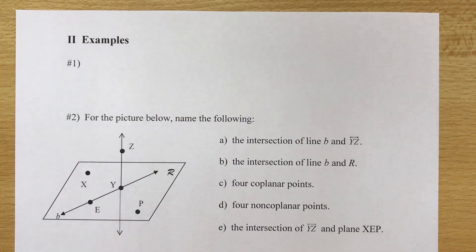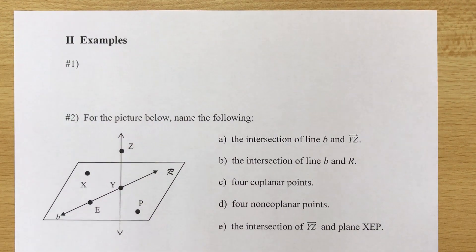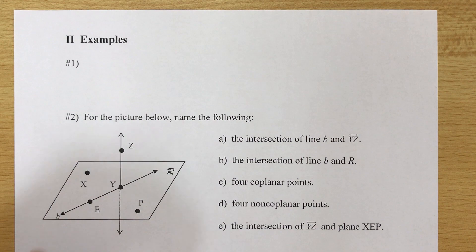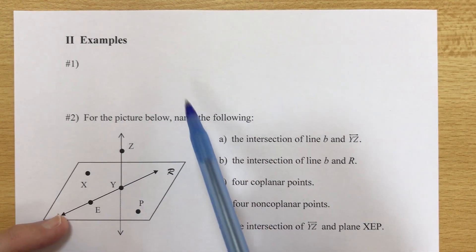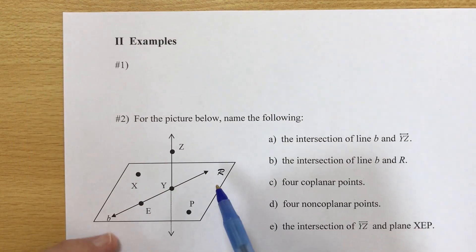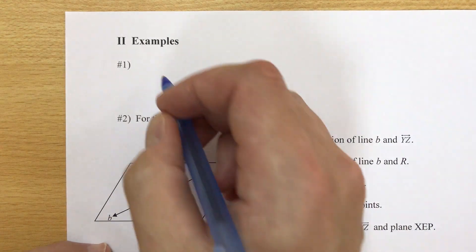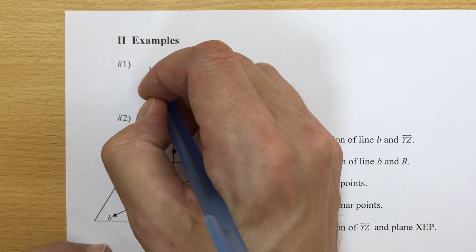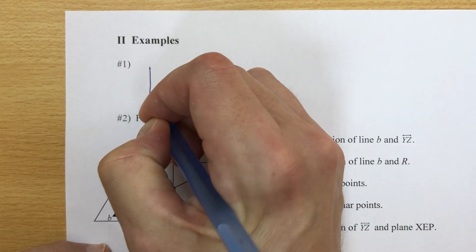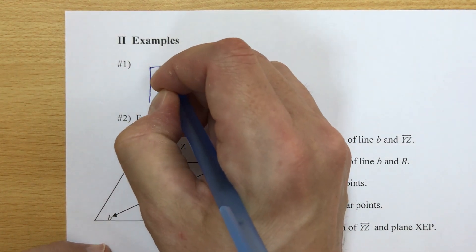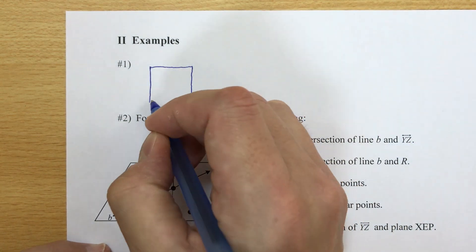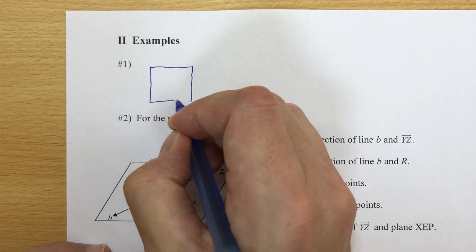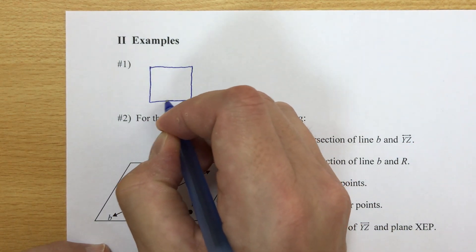Welcome back to part two. We are on the back of the notes now. We're going to do a couple of examples. Example one is totally blank — what we're going to do is draw what we call a rectangular prism, or in this case basically a cube.